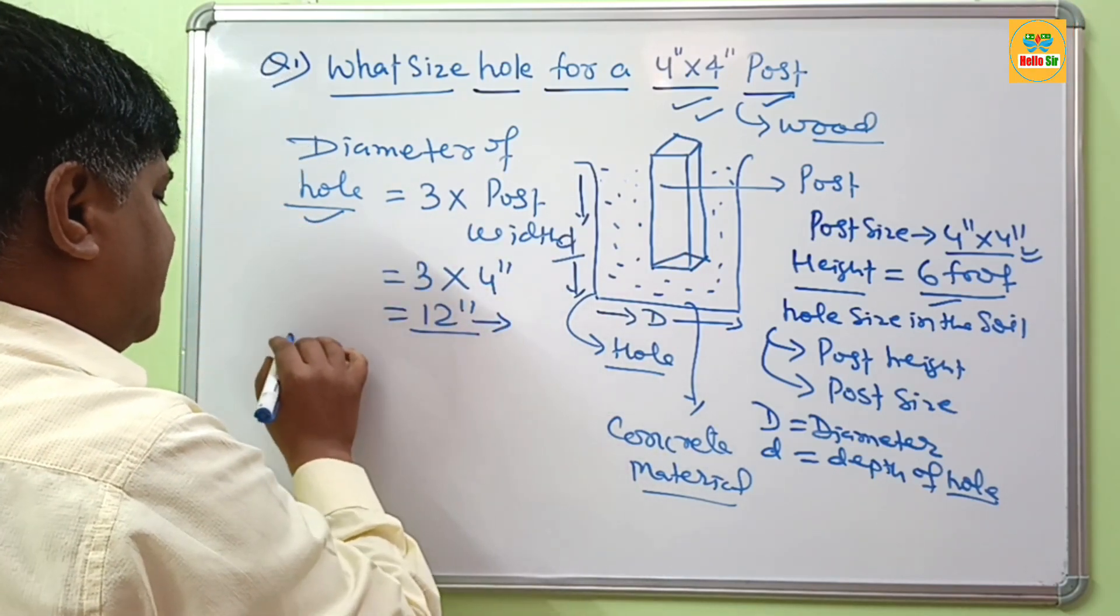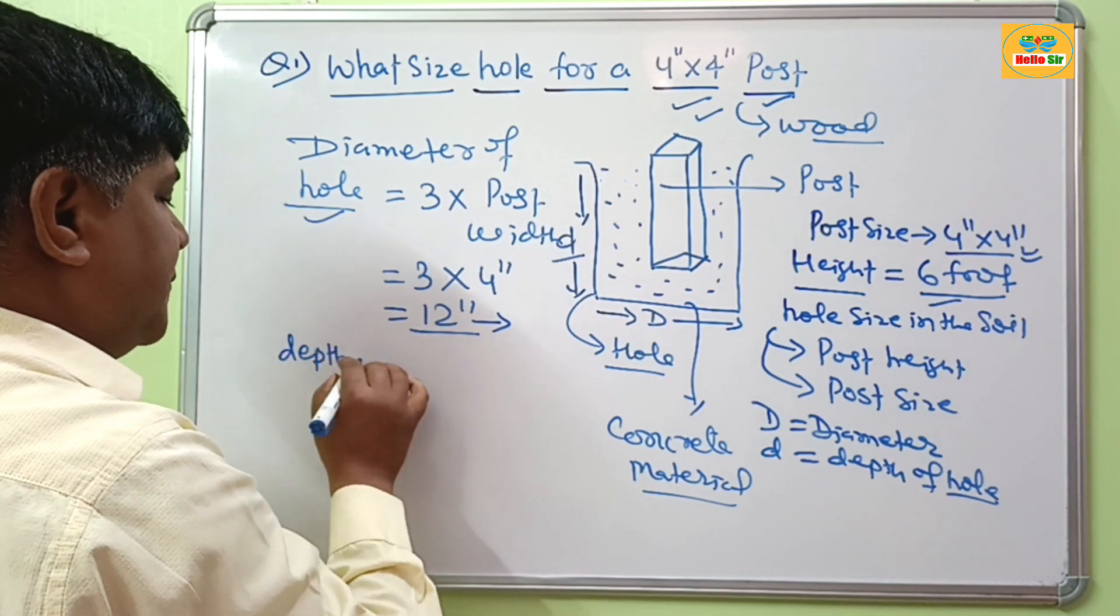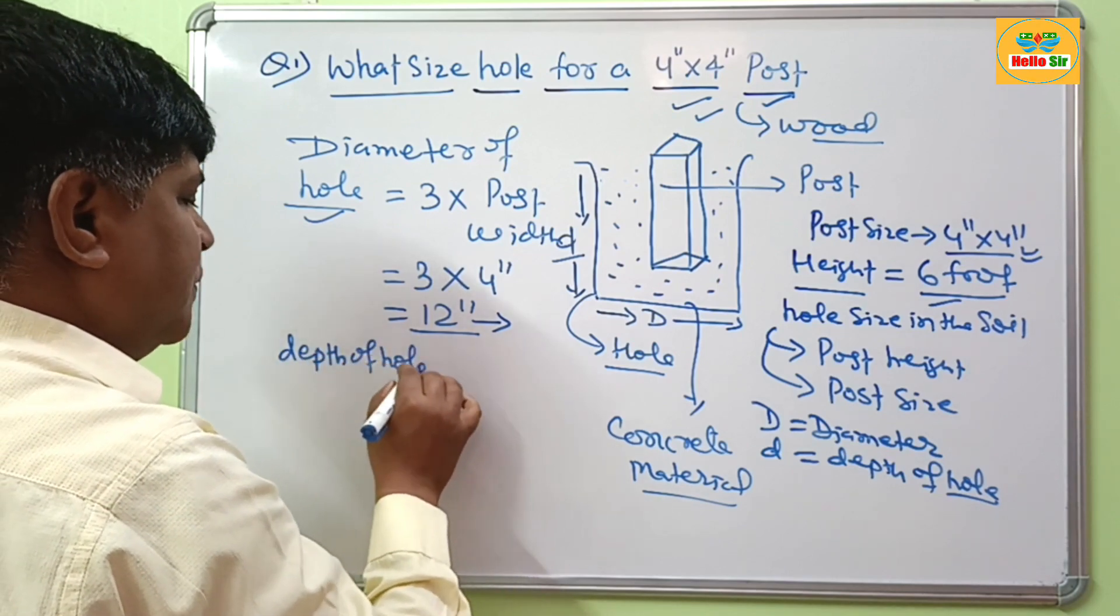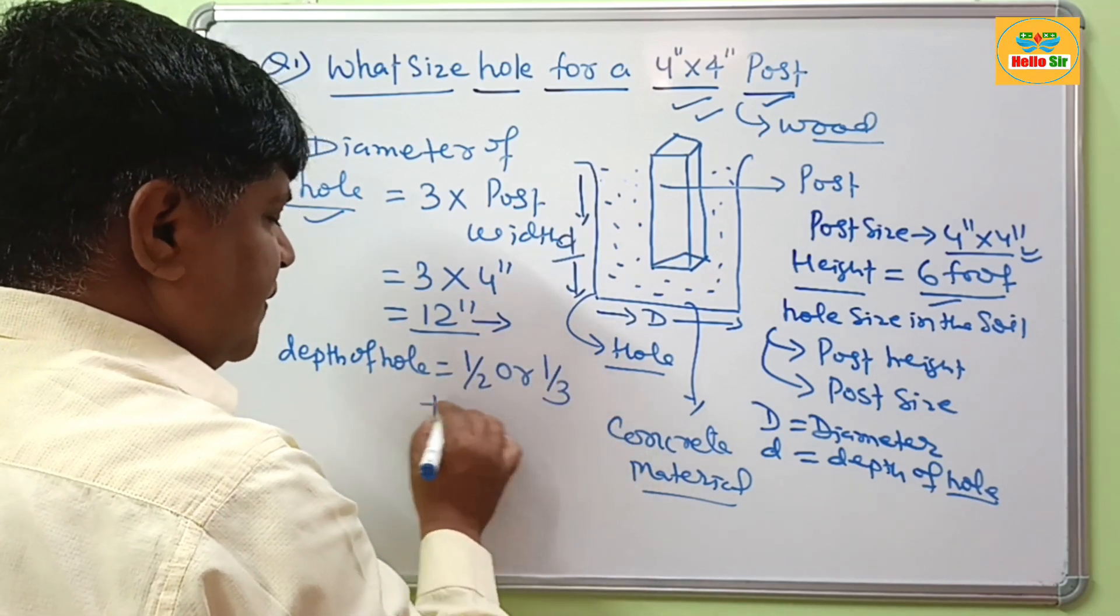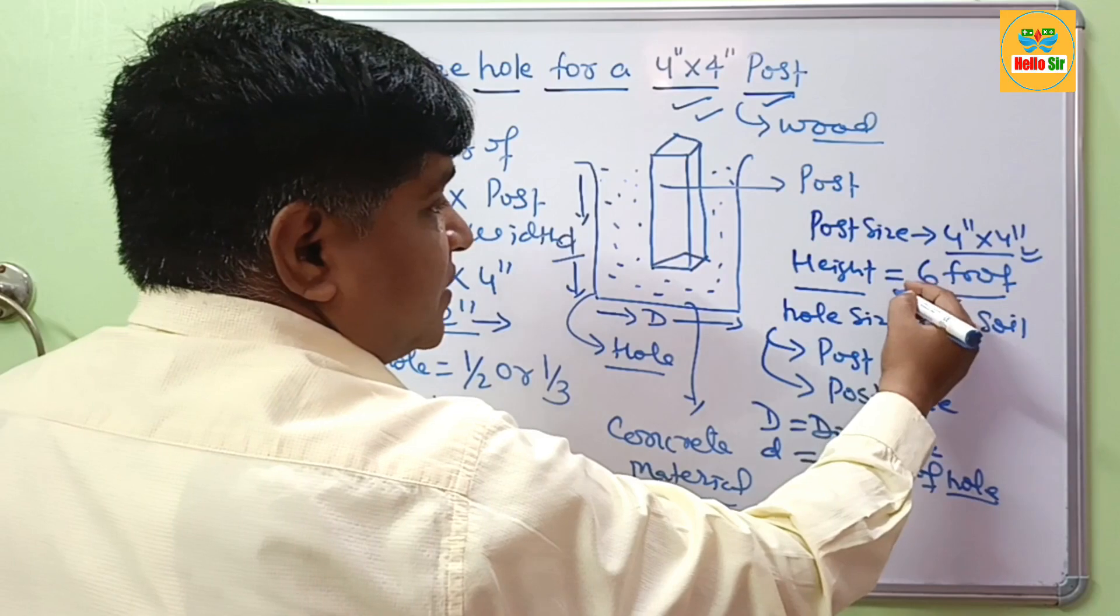And now we calculate the depth of the hole. How it should be deep? Depth of the hole should be either 1 by 2 or 1 by 3 to the height of the post. What is your height? That is 6 foot.